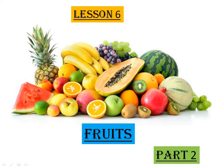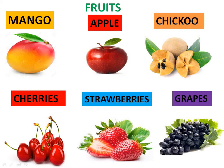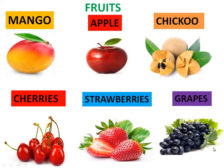Let us recall all of them one by one. These are the fruits which we learnt in Part 1: Mango, Apple, Chiku, Cherries, Strawberries, and Grapes. Now let us know about another set of fruits which are in Part 2.